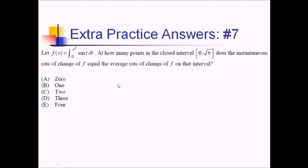For this problem, we have an integral function with x² in the upper limit of integration. How many points in the closed interval from 0 to √π does the instantaneous rate of change of f equal the average rate of change of f? We essentially need to find where the IROC and AROC for the f function line up.